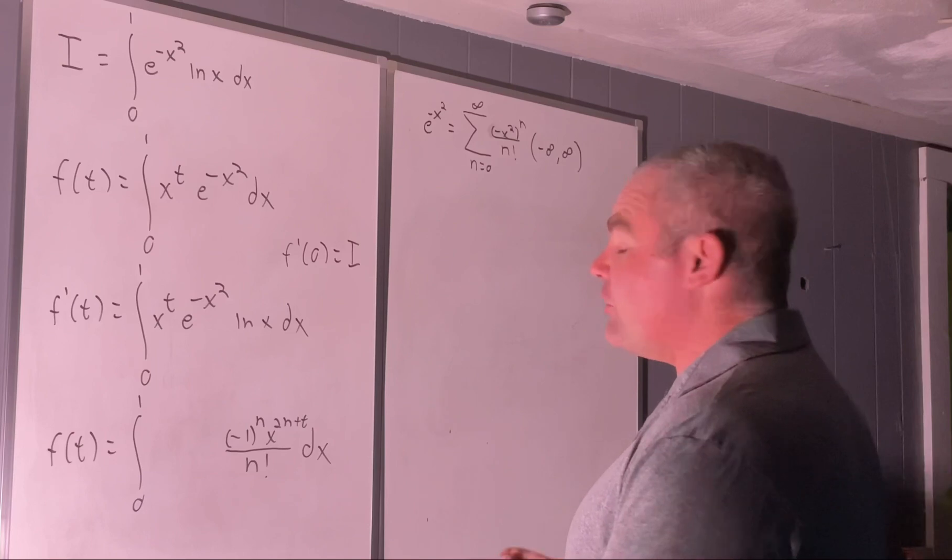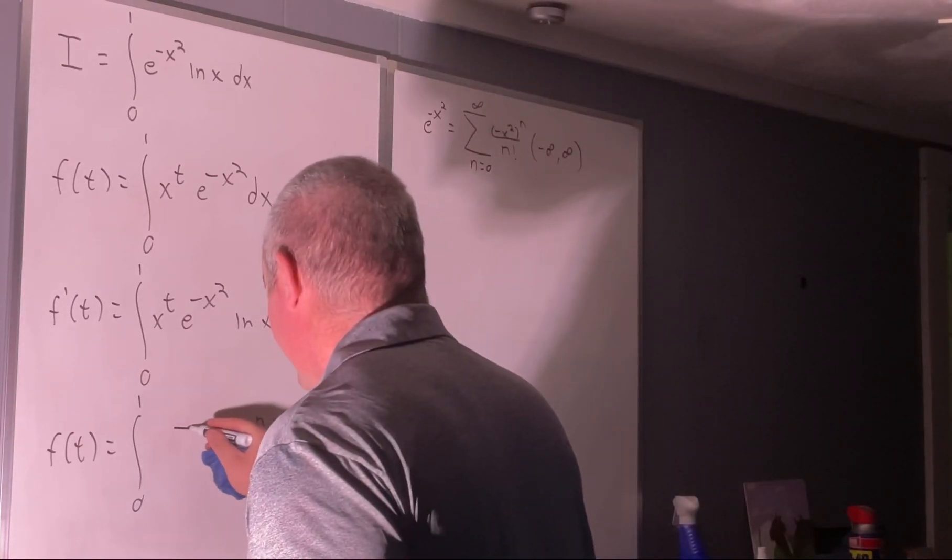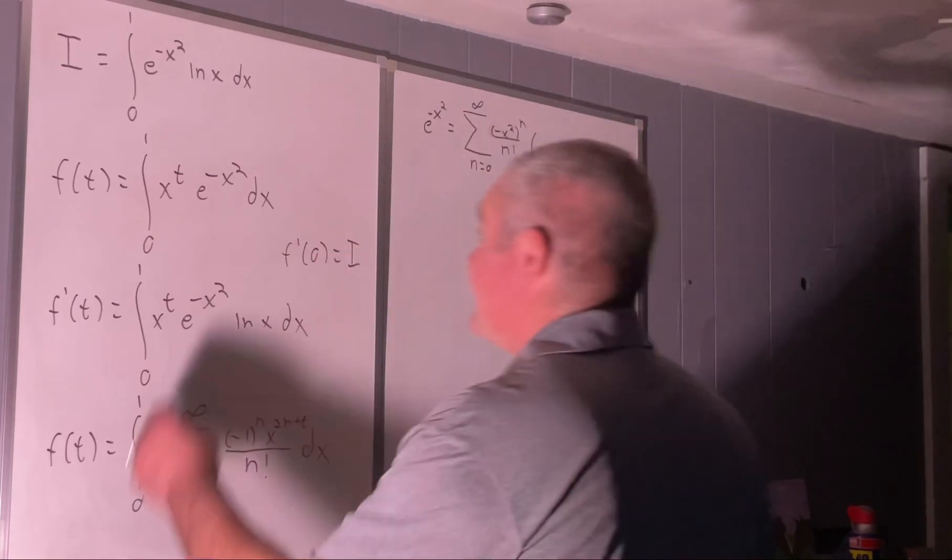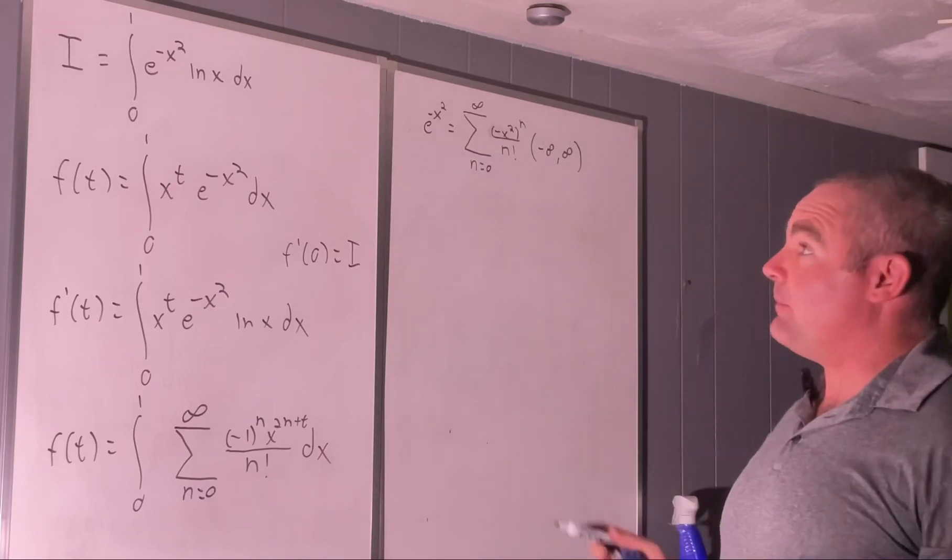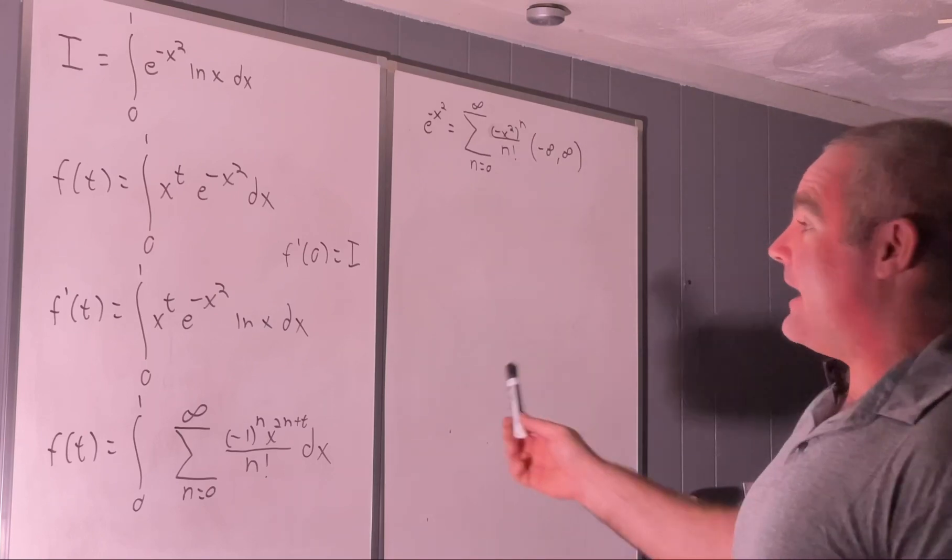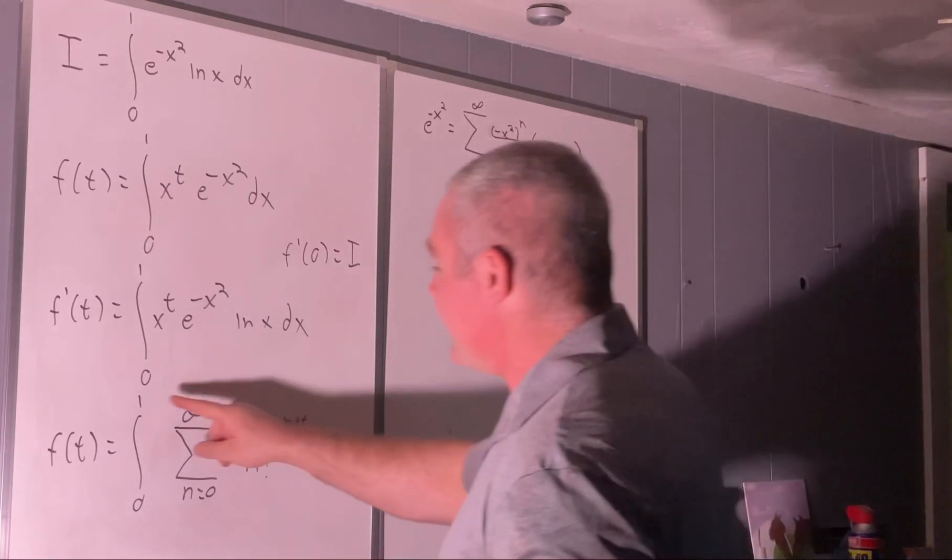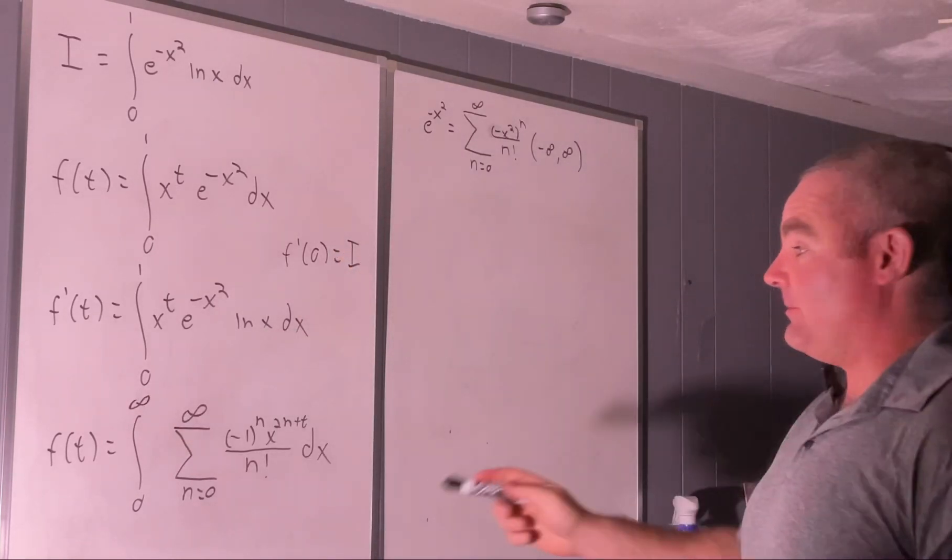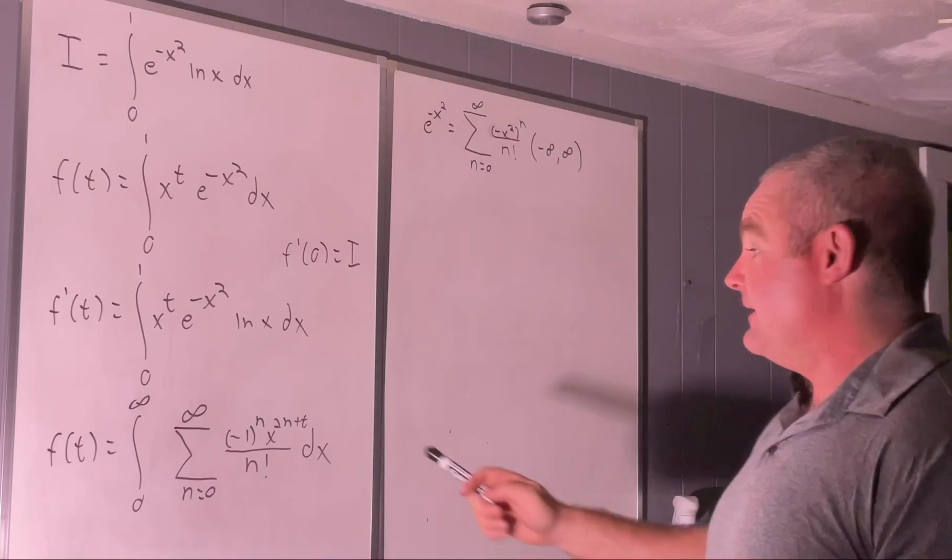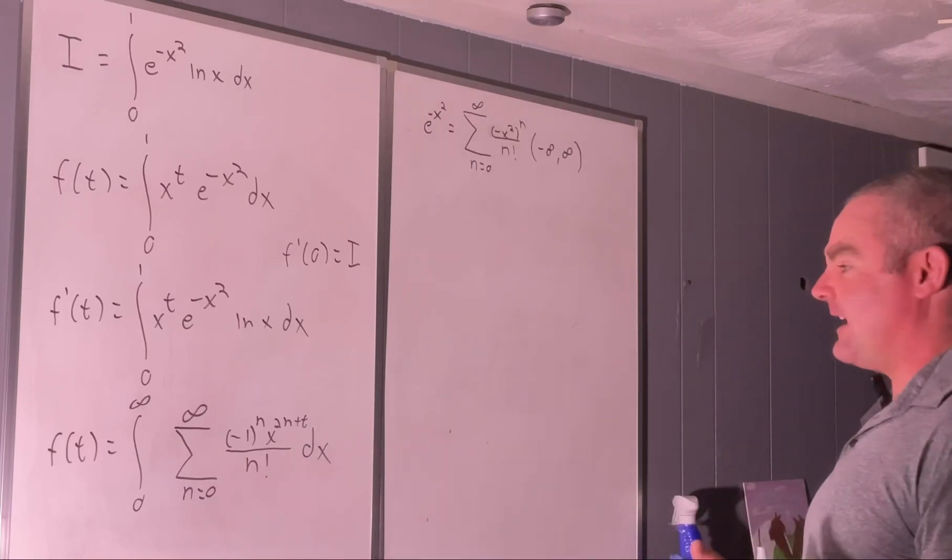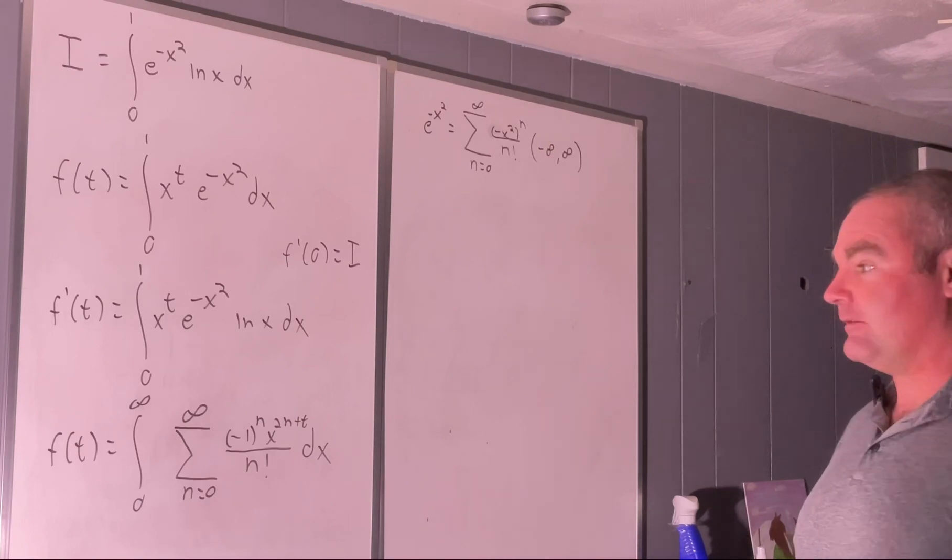An example of when you couldn't do that, by the way, let me rewrite this. Originally, I had tried to make this the integral from 0 to infinity of that. And by the way, that integral does converge, but you can't get the answer the same way that you get this answer. For instance, if this was the integral from 0 to infinity, you could not switch the summation and integral notations, because the integral from 0 to infinity of x to the 2n plus t, that would not converge. So you wouldn't be able to do it in that case.